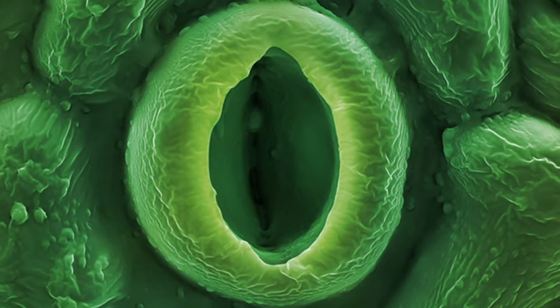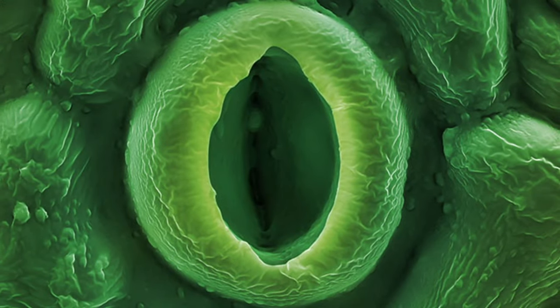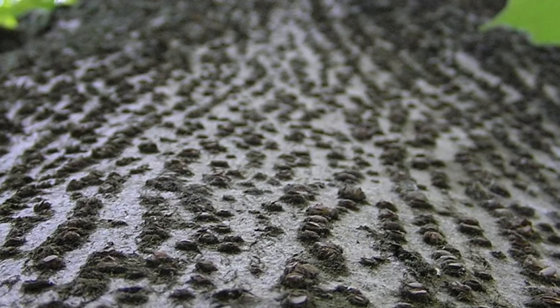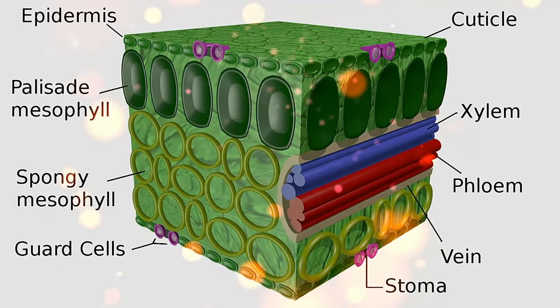Plants lose water from stem and leaves through special structures. Leaves bear small pores called stomata. Stomata are surrounded by guard cells, which are kidney or bean shaped in dicot plants and dumbbell shaped in monocot plants. Woody stems of plants bear lenticels, which always remain open.